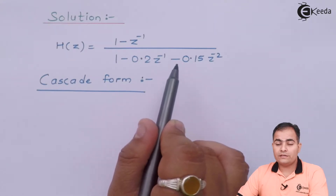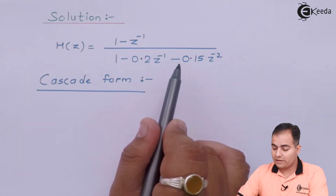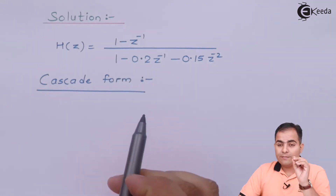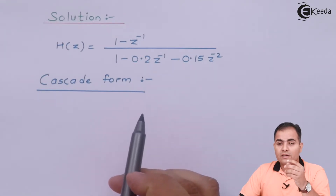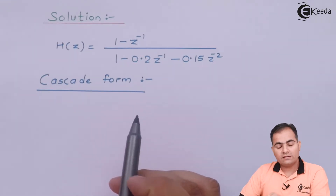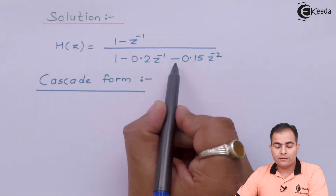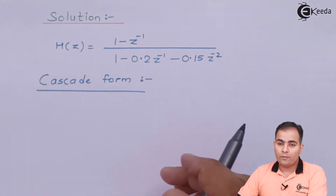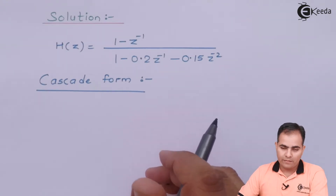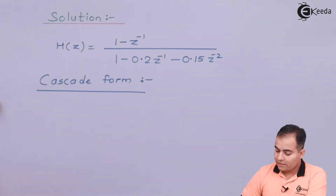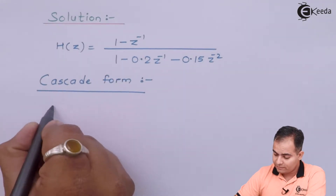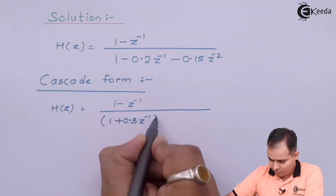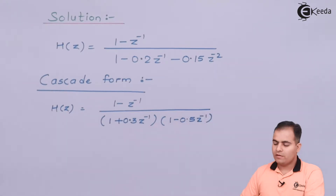We determine the signs based on the middle coefficient: -0.5 plus 0.3 gives -0.2, which matches. The product of -0.5 and +0.3 is negative, consistent with -0.15. So the factors expressed in z-inverse form are (1 + 0.3z⁻¹) and (1 - 0.5z⁻¹). These are the two factors of the denominator.